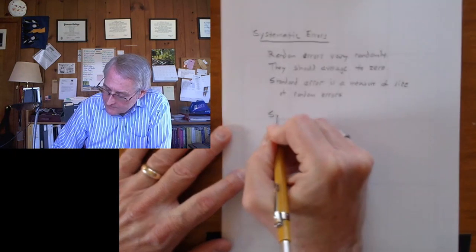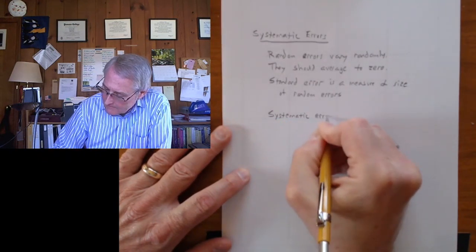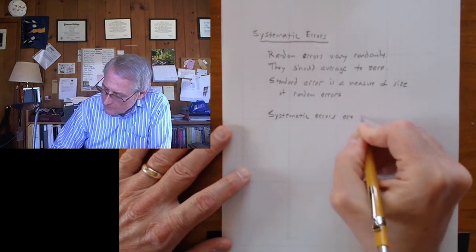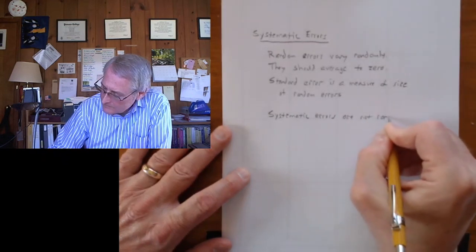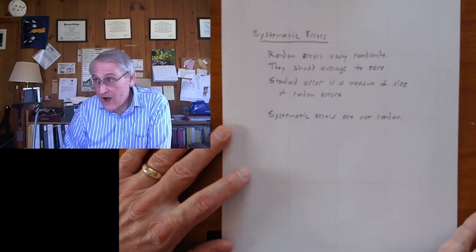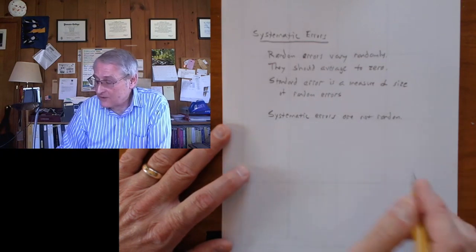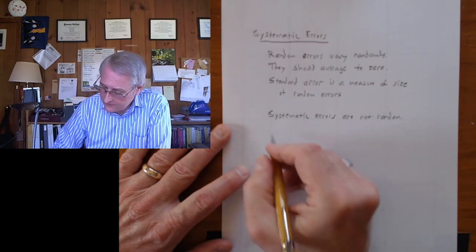Systematic errors are not random. And now, systematic errors are not always constant. They might be a bias that kind of goes and comes. But generally, there is some constant offset.